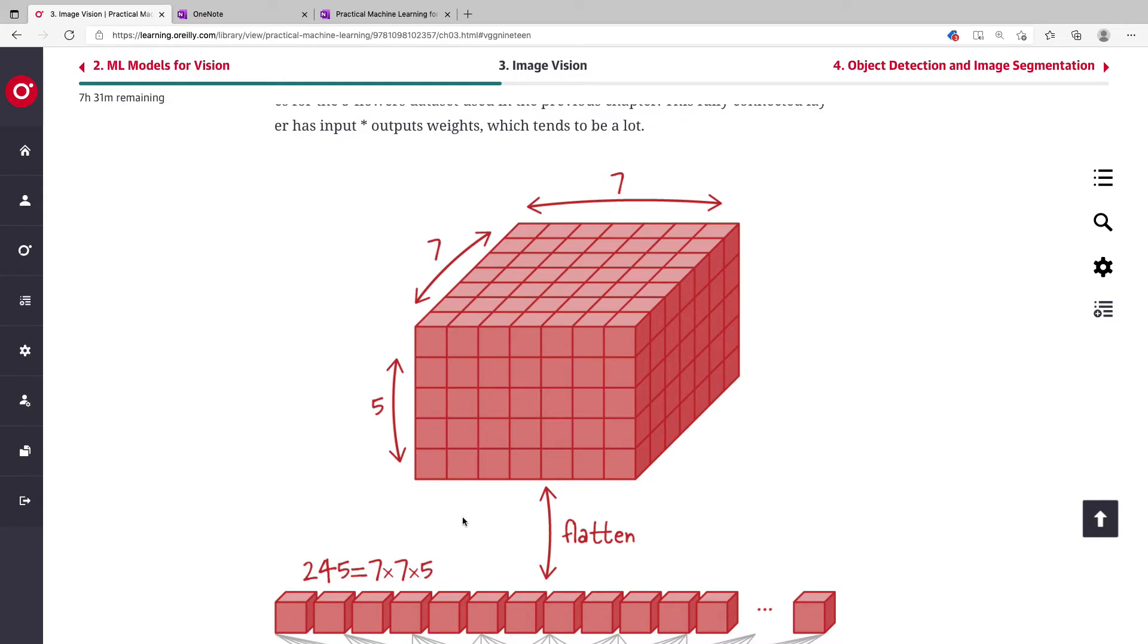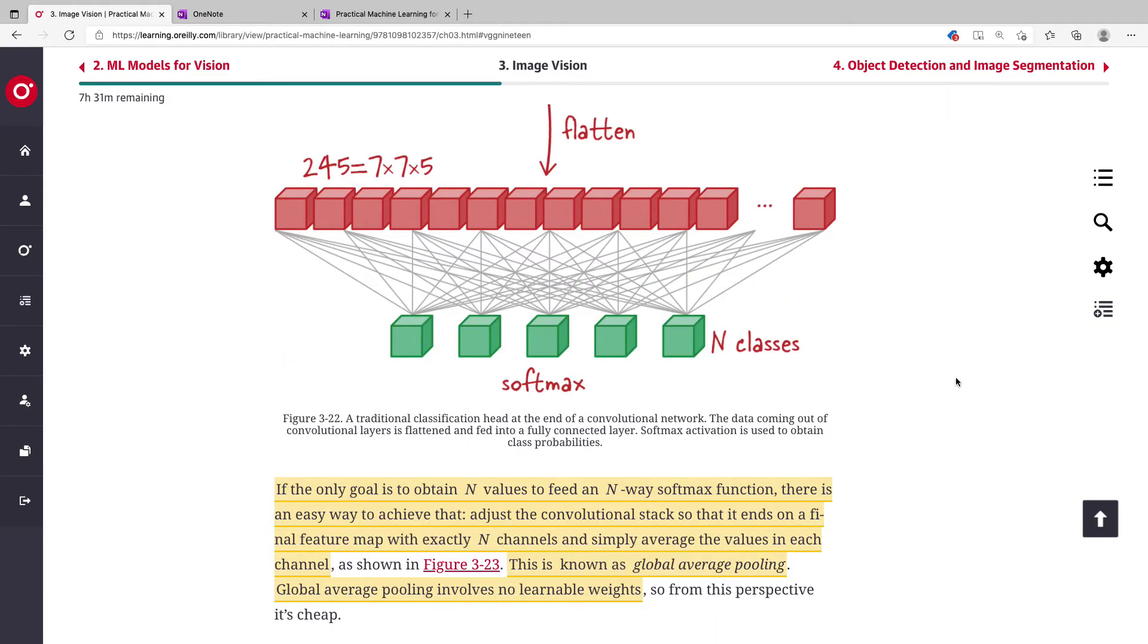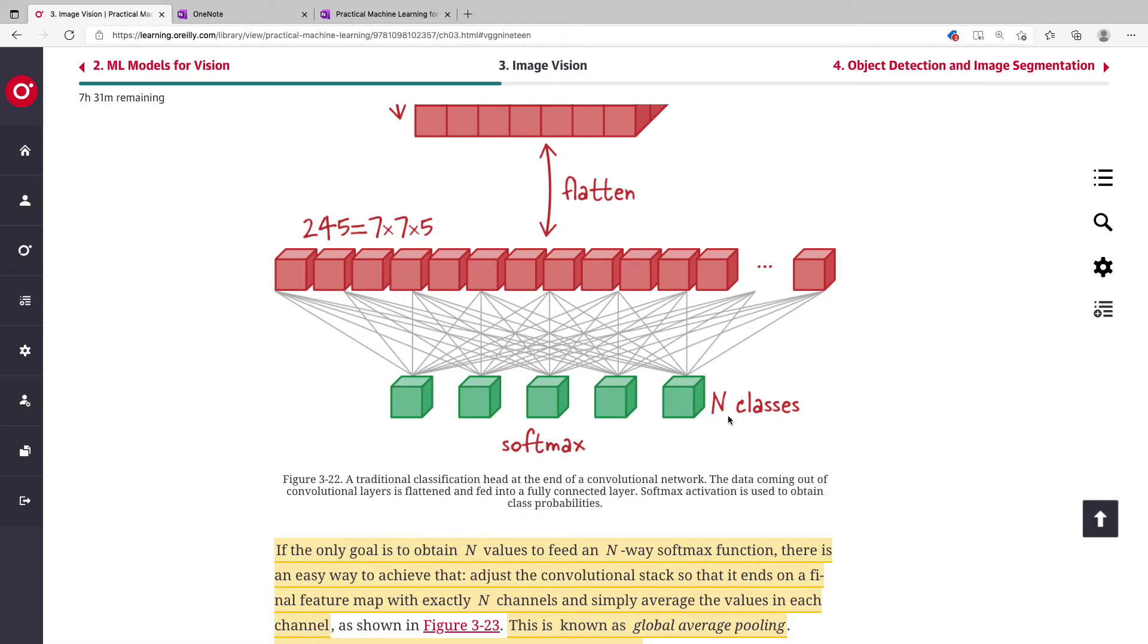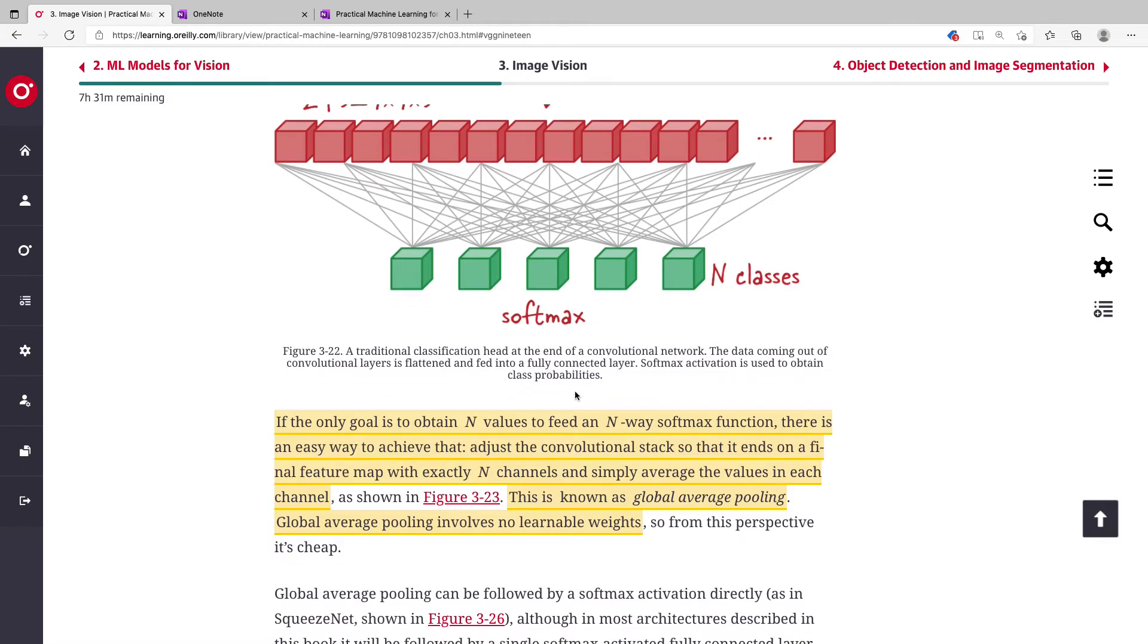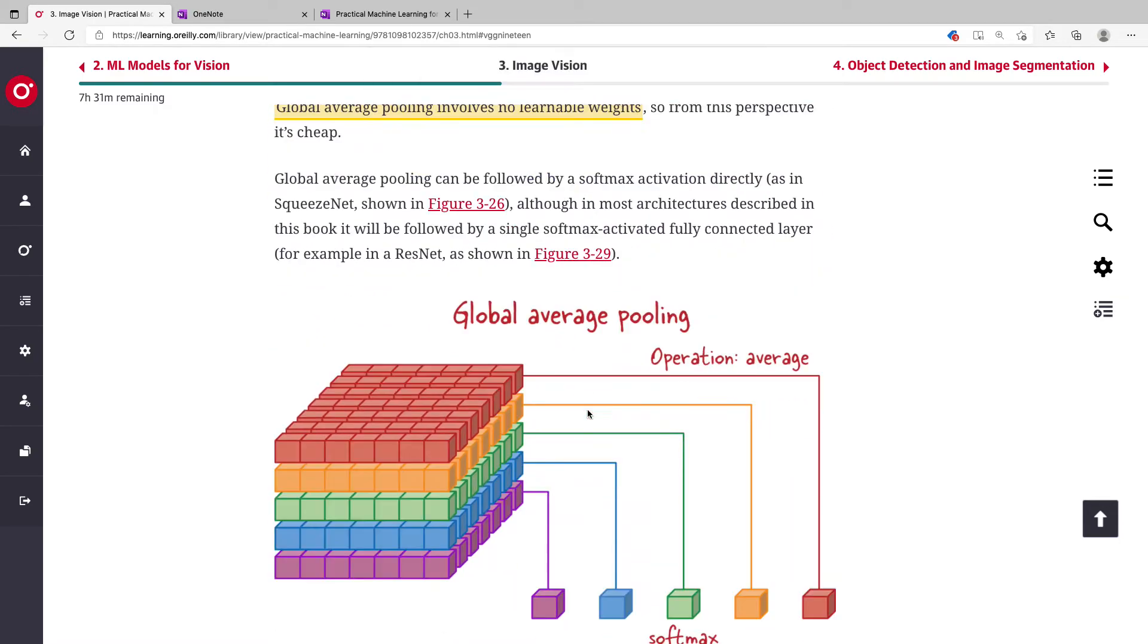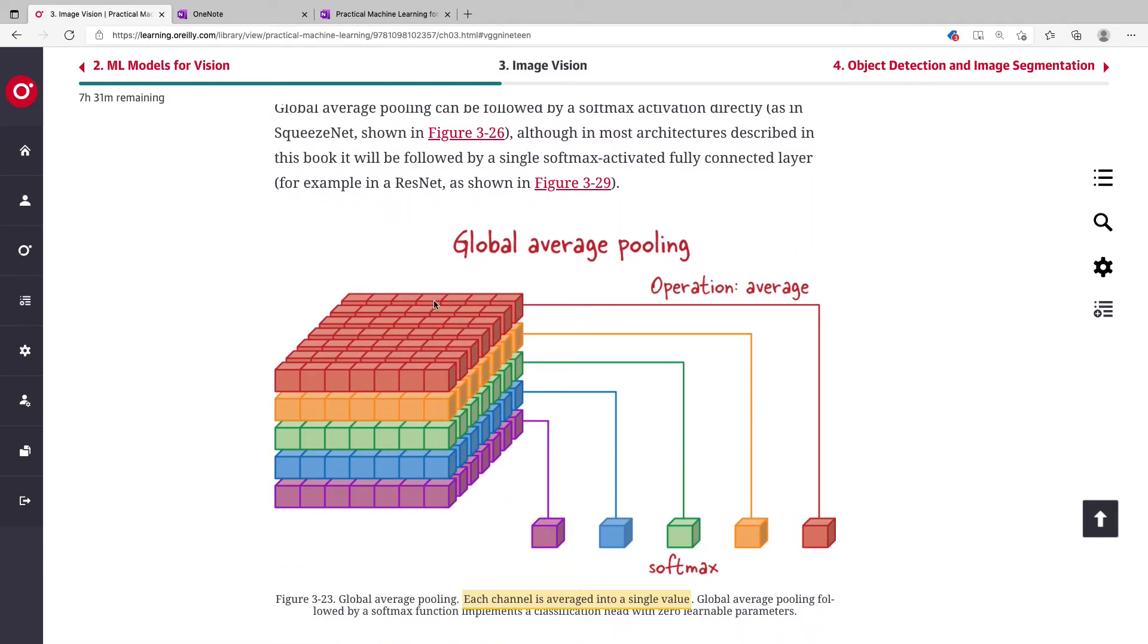If you're interested in five classes for your softmax, all you need to do is design your network such that the last convolution layer has five channels. When it has five channels, you take each channel and average the values. You add all the values together and divide by the total, which is the length times width.